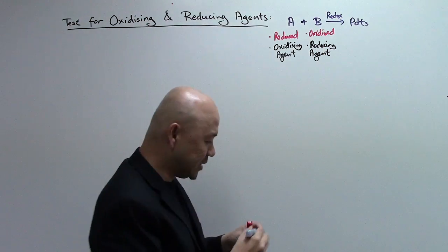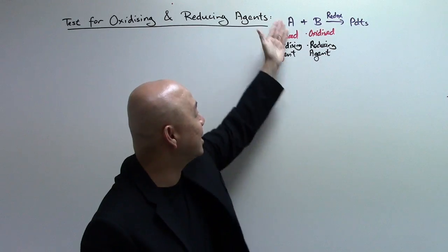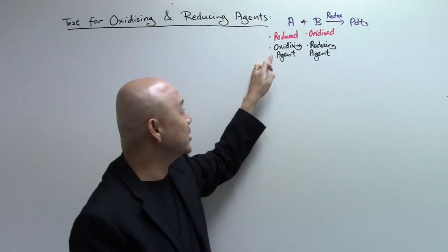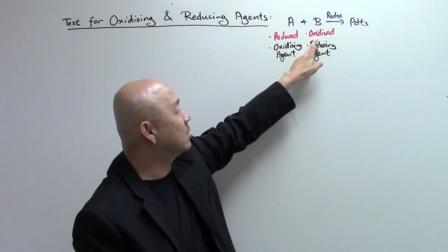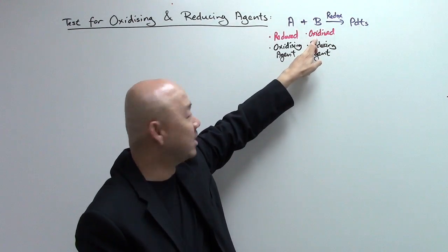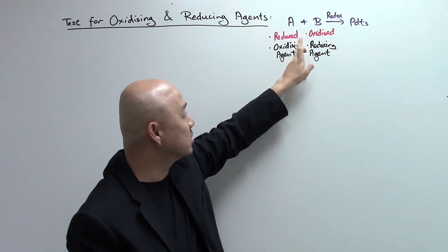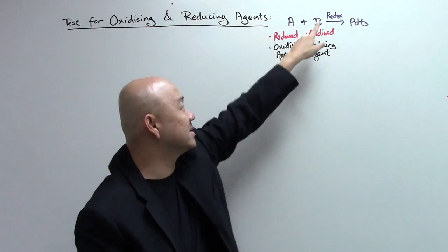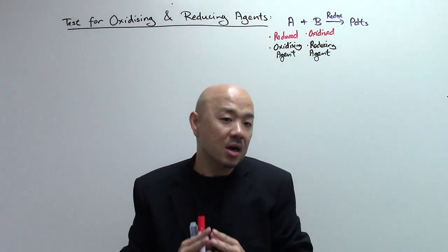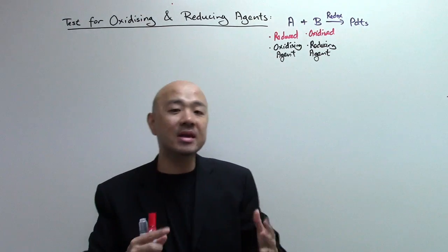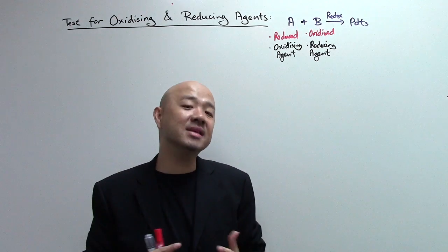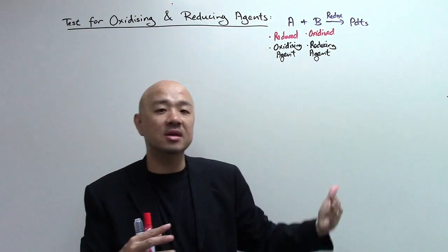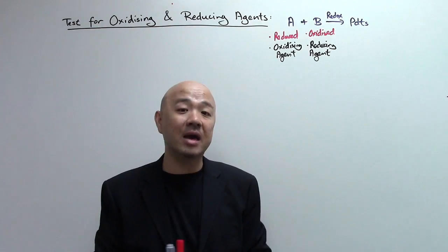The job of the agent is to help the other substance get oxidized or reduced. A, the oxidizing agent, helps B to get oxidized while itself is being reduced. B, the reducing agent, helps A to get reduced while itself is being oxidized. This means an oxidizing agent will always react with a reducing agent in a redox reaction.